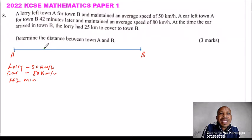So what we need to argue here is, let's say Arodi was there. When the car arrived in town B, Arodi had 25 km. So we can say let the total distance from A to B be X. So by the time the car arrived at town B, then Arodi had 25 km. So we need to find out how many km had Arodi covered in those 42 minutes.